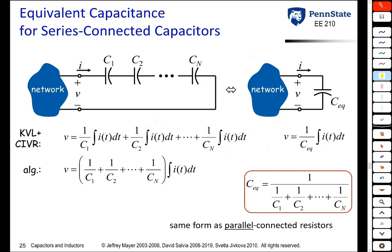Let's look at capacitors in series. Suppose you have N capacitors connected in series with a current flowing into the first capacitor. That current causes positive charges to accumulate on one plate, which causes the same number of negative charges to accumulate on the other plate. Those charges propagate all the way down the line of capacitors. In other words, all of these capacitors are going to have the same charge — capacitors in series have to have the same charge.